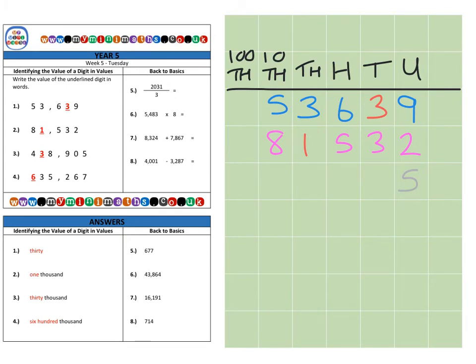We've got zero tens, nine hundreds, we've got eight thousands. We've got the red three in the ten thousands column, and then finally our sixth digit is our four, which goes in the hundred thousands column.